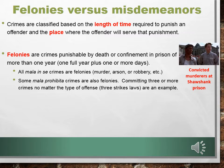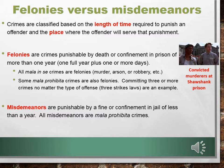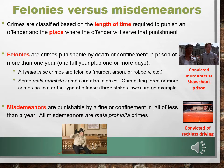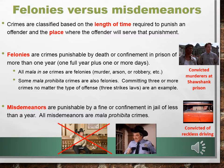The lesser crimes are called misdemeanors. They are punishable by a fine or confinement in jail of less than a year, and all misdemeanors are mala prohibita crimes. Here are Bo and Luke Duke — we're going to get them convicted of reckless driving and they're going to serve in a jail run by Roscoe P. Coltrane. He runs the jail, not the prison, in Hazard County.